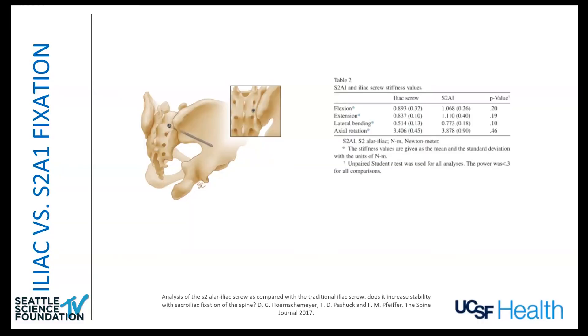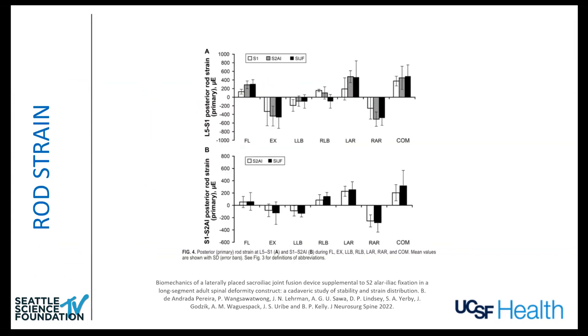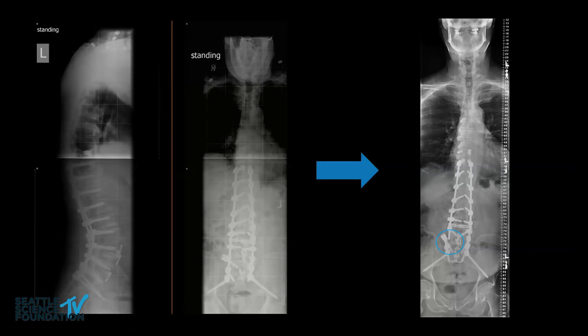In terms of biomechanics, if you look at iliac fixation versus S2AI screws, there's no real difference in biomechanical strength between either fixation — so it's kind of dealer's choice. However, with pelvic fixation you get increased rod strain, primarily in flexion and also in compression. That increases the stiffness of the construct and translates in part onto the rods. Here's an example of a case where the rod broke distally — not entirely the fault of the S2AI screws, but they likely contribute.